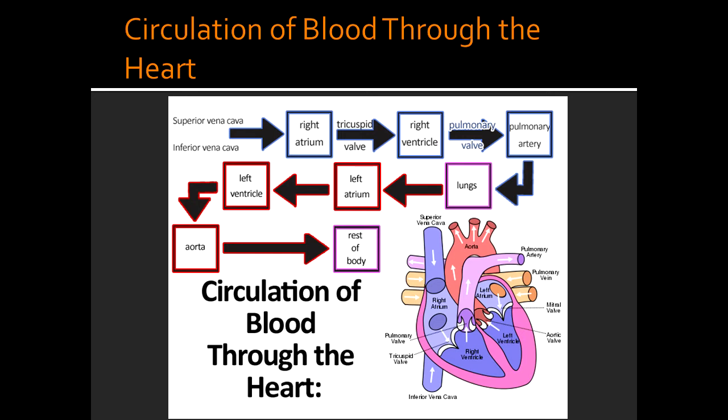The oxygenated blood from the lungs goes to the left atrium. From the left atrium, it passes through the mitral valve to the left ventricle. From the left ventricle, it gets pumped through the aortic valve to the aorta.